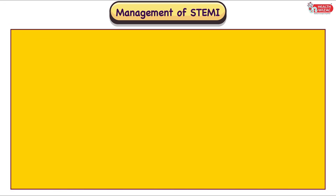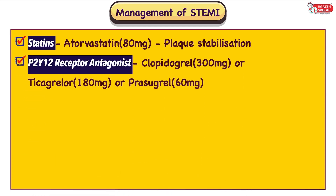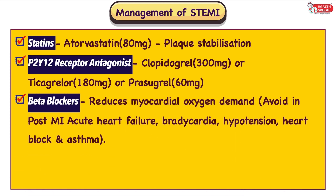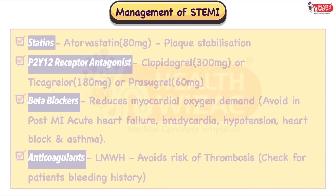Along with MONA therapy, other agents used in the acute scenario include statins — specifically Atorvastatin 80 mg — for plaque stabilization. P2Y12 receptor antagonists include Clopidogrel 300 mg STAT, or Ticagrelor 180 mg STAT, or Prasugrel 60 mg STAT. Beta blockers help in reducing myocardial oxygen demand but should be avoided in post-MI acute heart failure, bradycardia, hypotension, heart block, and asthma. Anticoagulants — specifically low molecular weight heparins — reduce the risk of thrombosis, but patients should be checked for history of bleeding before starting them.